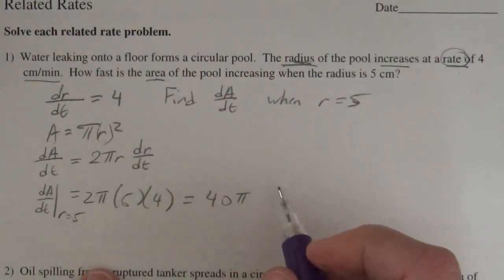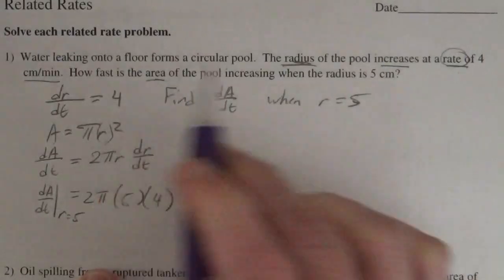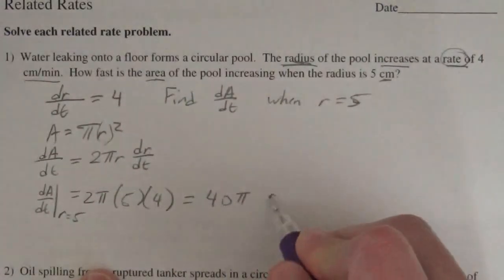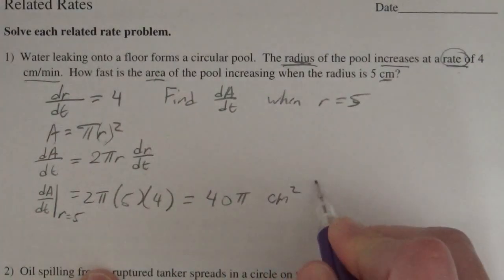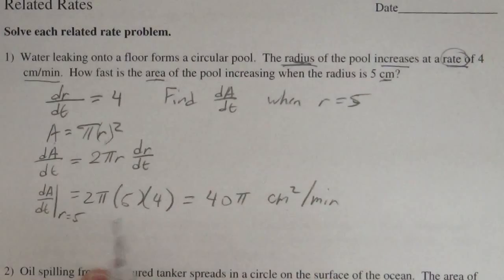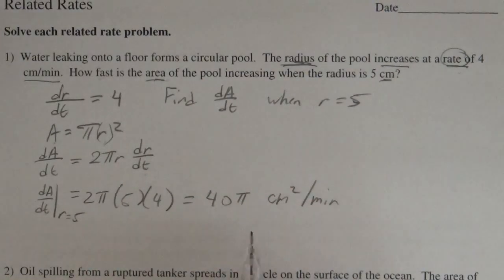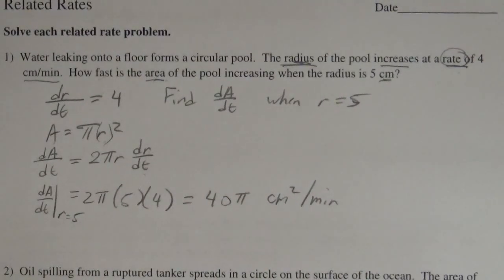And then we'll put on some units. Area is in centimeters, so centimeters squared per minute. So the rate at which the area is changing is 40π centimeters squared per minute. Just what you've always wanted to know.